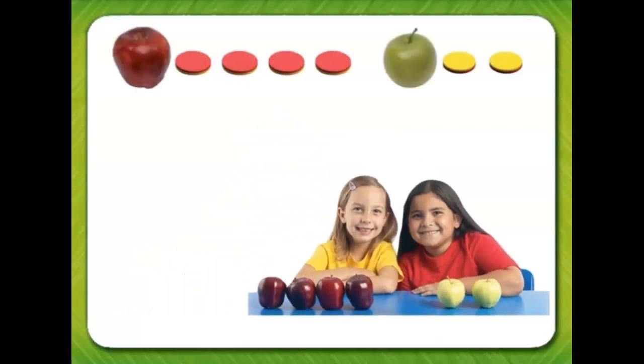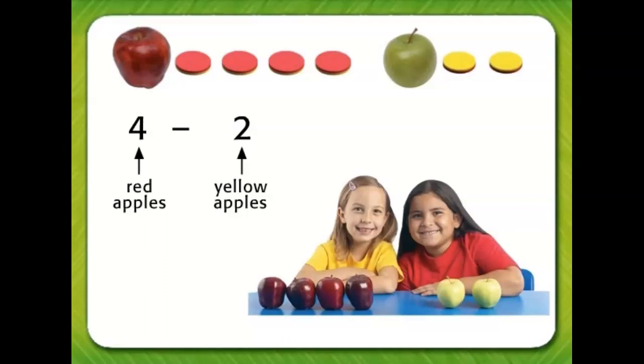Here is how we write a subtraction number sentence to compare. Four red apples minus two yellow apples is a difference of two apples. There are two more red apples than yellow apples.